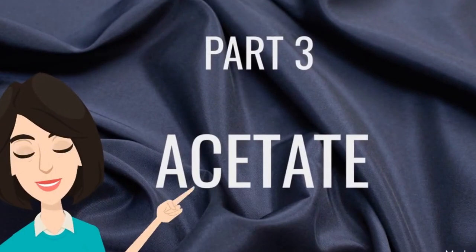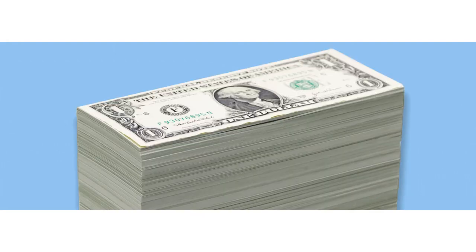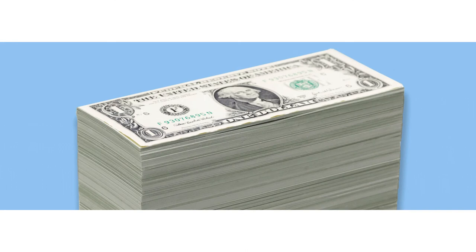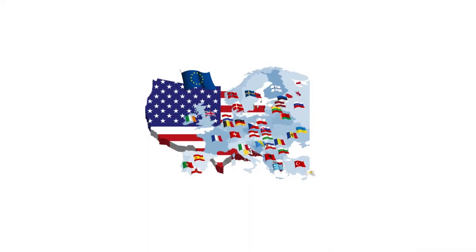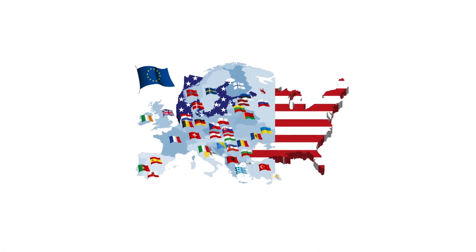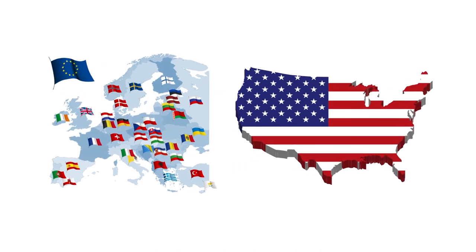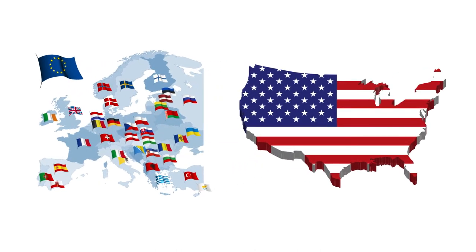Now we are moving on to acetate. Although it is also made from wood pulp like rayon and lyocell, acetate fabric is considered semi-synthetic. The main advantage of semi-synthetic acetate fiber compared to natural fibers is its very low cost. Cellulose acetate is the acetate ester of cellulose, first discovered in 1865 by French chemist Paul Schutzenberger.